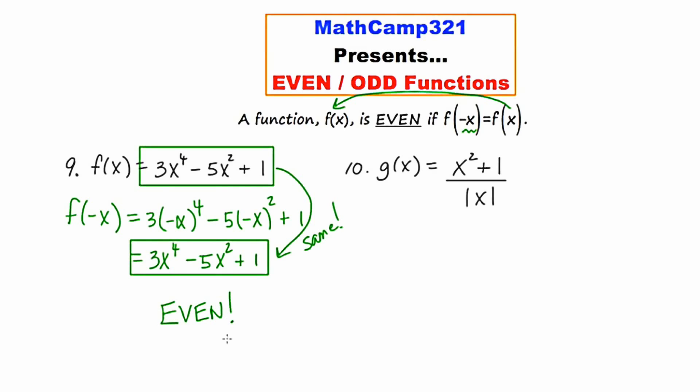Because these are the same, that means the function is even. And because the function is even, it's going to have y-axis symmetry — and I know that even though I've not looked at any graph yet.